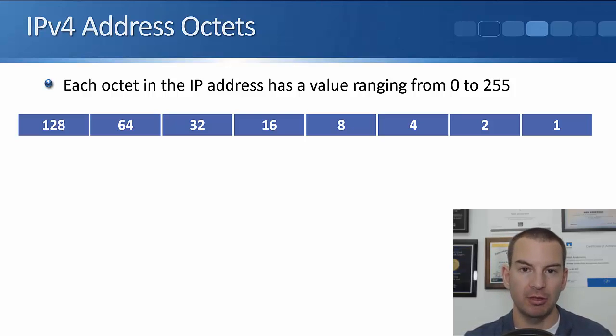It's binary, so the rightmost bit is either a 0 or a 1. Then we double each time we add a bit to the left. So it goes 1, 2, 4, 8, 16, 32, 64, and 128. It's binary, so we multiply by 2, we double each time we go up.